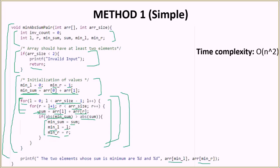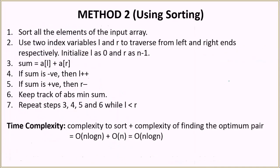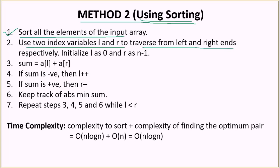That was the first solution which had a time complexity of order n squared. We can definitely do better since this is a brute force algorithm. The better method is method two, where we will be using sorting. The algorithm says: first, sort all the elements of the input array. Then we use two index variables l and r to traverse from the left and right ends respectively, initializing l equal to zero and r equal to n minus one.